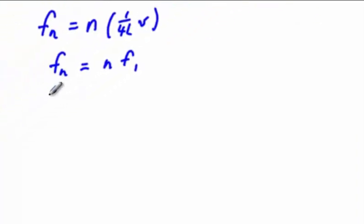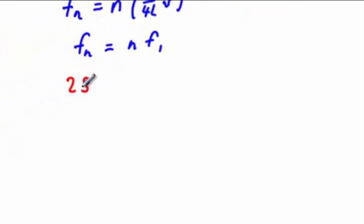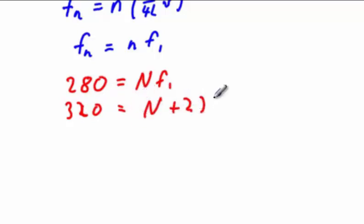Therefore I can state that 280 is equal to some n—I'll call that capital N so that it's no longer arbitrary—times f1, and that 320 is 2 n's higher than this, or capital N, whatever that should happen to be, plus 2, also times f1.